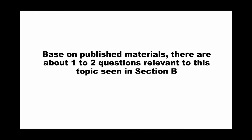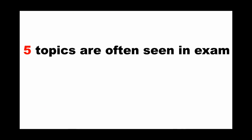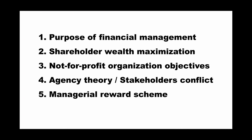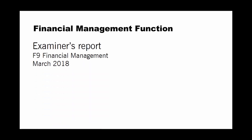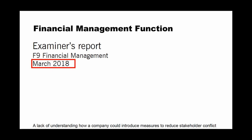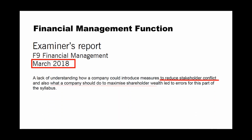The fourth area in Section B is the financial management function. Based on published materials, there are about one to two questions on this topic. Five topics are commonly seen: purpose of financial management, shareholder wealth maximisation, not-for-profit organisation objectives, agency theory or stakeholder conflict, and managerial reward schemes. The examiner noted that students struggle with how to reduce stakeholder conflict and what a company should do to maximise shareholder wealth.